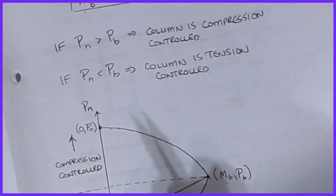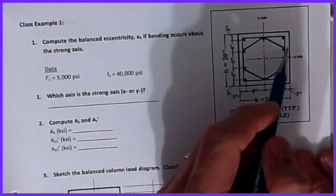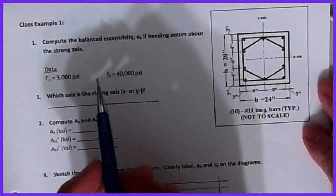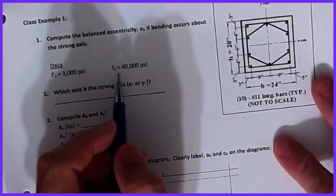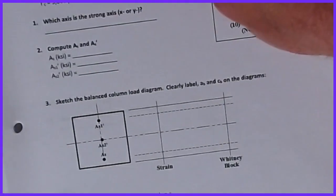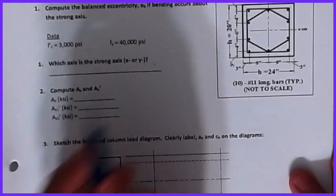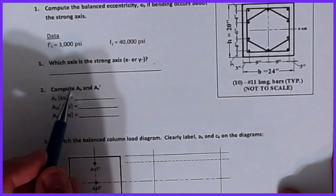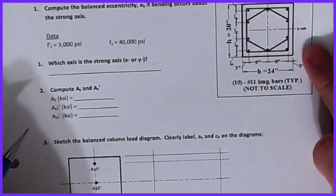That's the basics of the interaction diagram process. For my students, I'll walk you through an example procedure. We have a fairly complex column with stirrups providing confinement for the longitudinal bars. The given values are f'_c of 3,000 psi and f_y of 40,000 psi. The first question is which axis is the strong axis — that has to do with I_x and I_y — and then we compute A_s and A_s'.